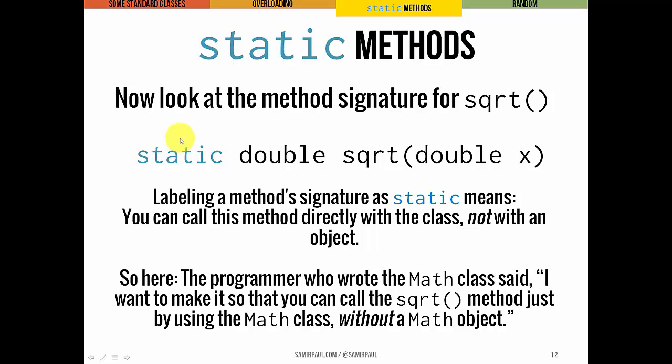If we label a method as static, it means that we can call that method without creating an instance of a class, without creating an object. So the programmer who wrote the Math class basically said, hey,